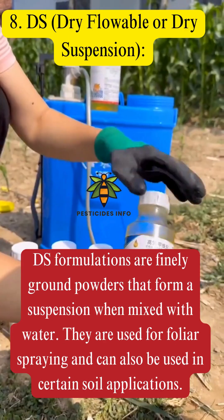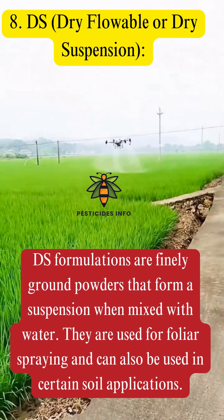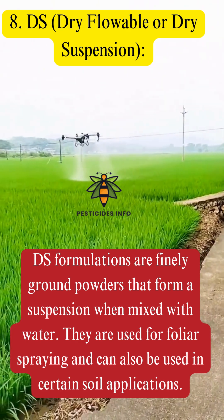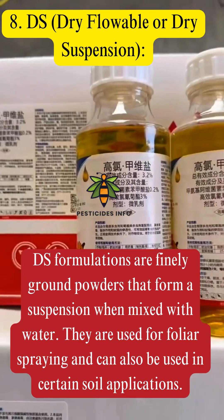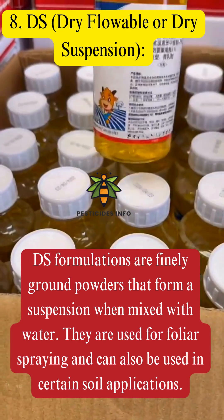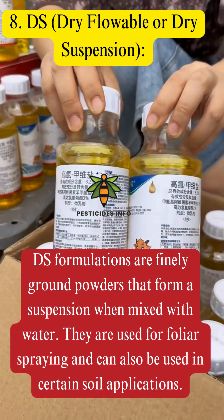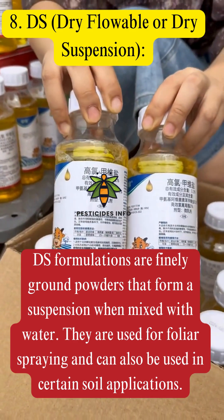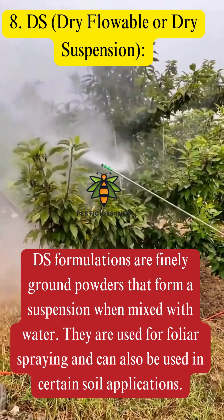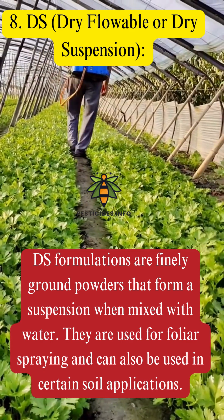8. DS — Dry Flowable or Dry Suspension. DS formulations are finely ground powders that form a suspension when mixed with water. They are used for foliar spraying and can also be used in certain soil applications.